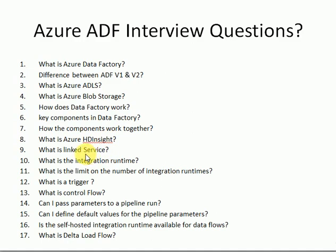You may get a question like: what are linked services and why do we use them? You need to give a complete overview. When connecting to source or target systems — on-premises, any database, flat files, or any application — you need all the connection information. That connection information is stored in linked services, which we use to connect to all source and target systems.